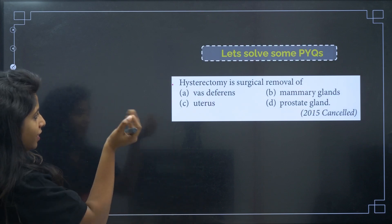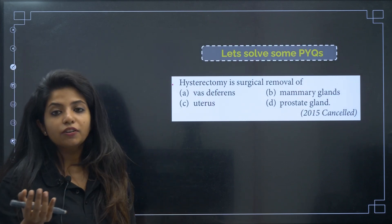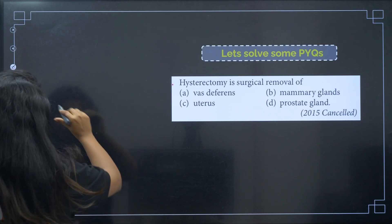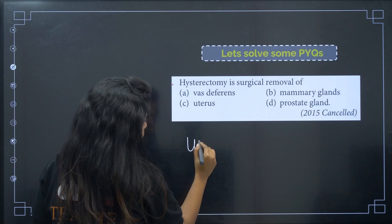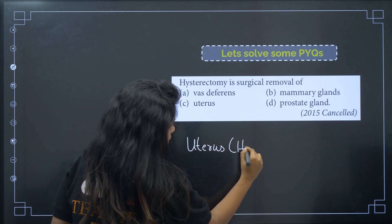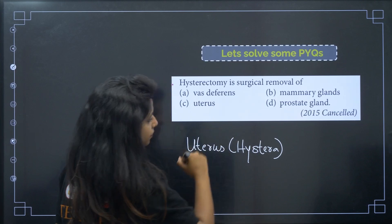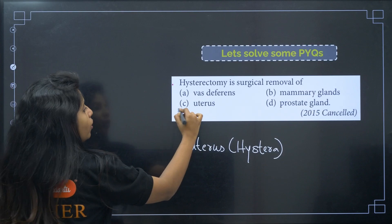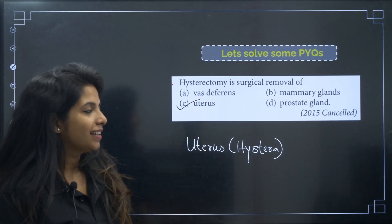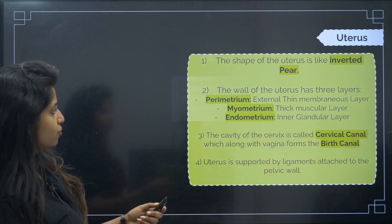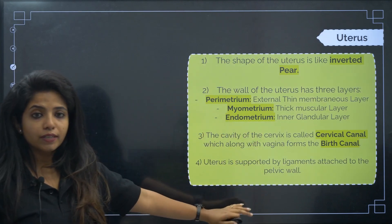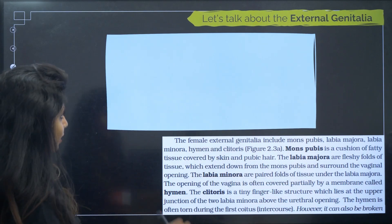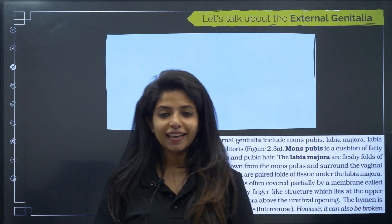A previous year question (NEET 2015 cancelled): 'Hysterectomy is the surgical removal of what?' The uterus is also known as the hystera, so hysterectomy is the surgical removal of the uterus.